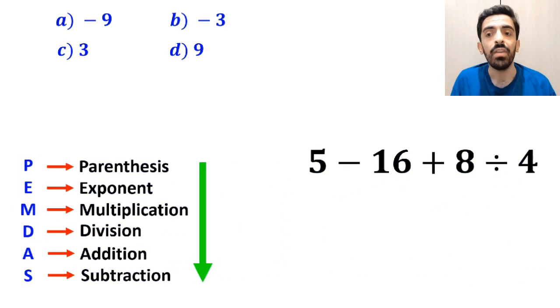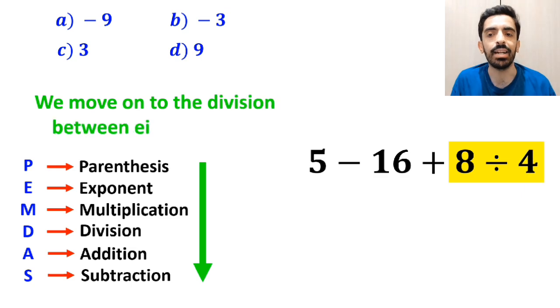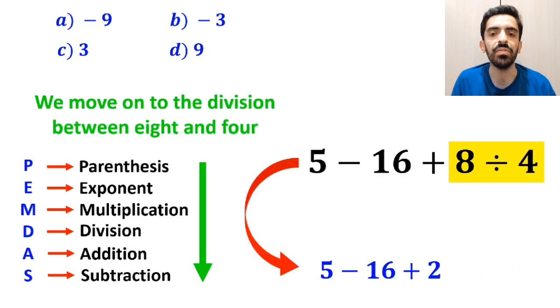In the next step, we move on to the division between 8 and 4 and replace this expression with 5 minus 16 plus 2.